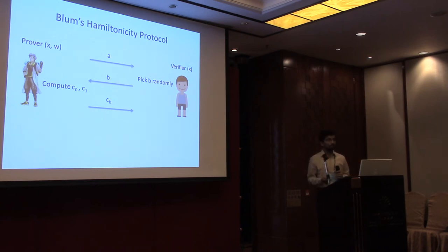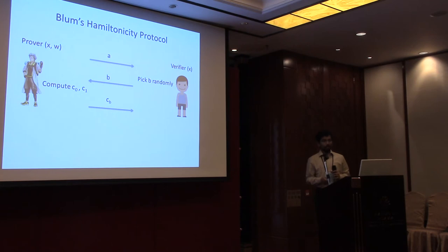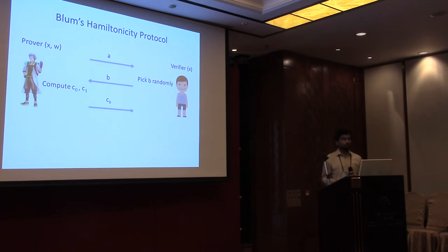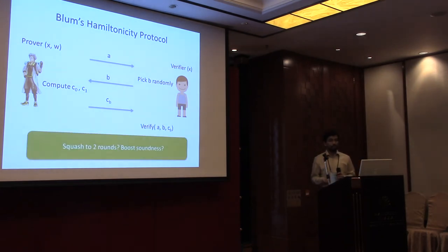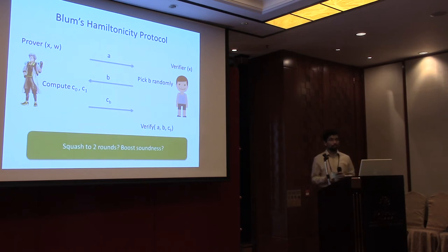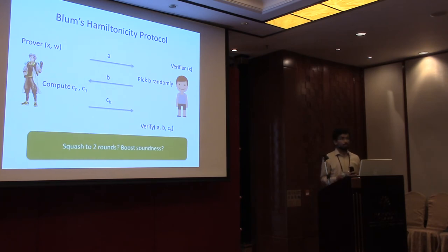This is a standard three-round sigma protocol: the prover initially sends string A, the verifier sends a challenge, and the prover opens the response. This three-round protocol only gives a constant soundness error, but it will be good enough as a starting point. The natural question is: how do we squash it into just two rounds? And we also need to boost soundness. Let's first ignore the soundness issue and see how to squash this protocol into a two-round protocol.